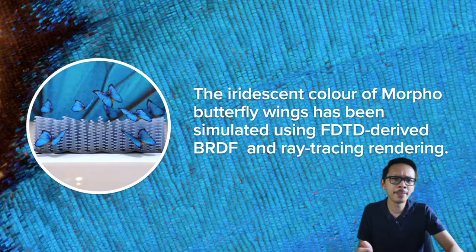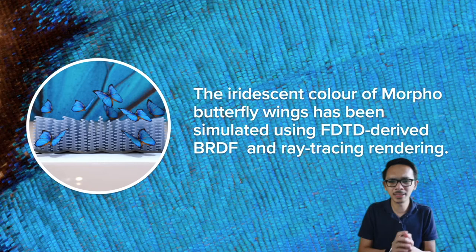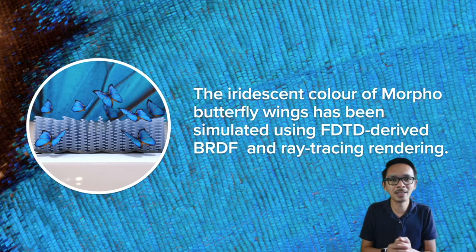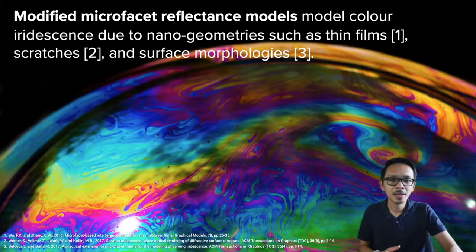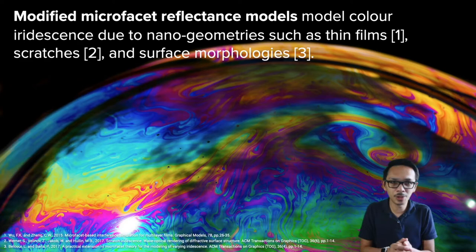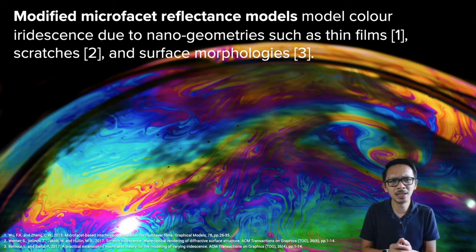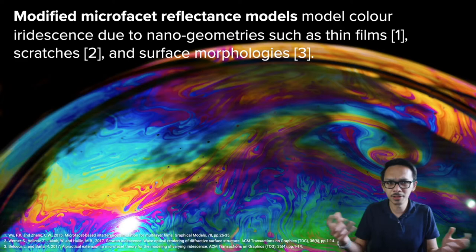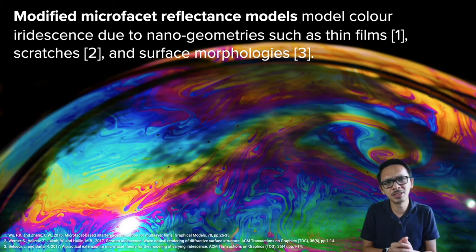In the past, we found a few successful examples. One of these is the blue colors of the Morpho butterfly wings, where they use FDTD simulation and ray tracing rendering to render the structural colors of the butterfly wings. There is also a beautiful image of the colored iridescence from soap bubbles. Other light effects using computer graphics include thin lens as well as scratches for surface morphology. You can go to the reference section for more details.